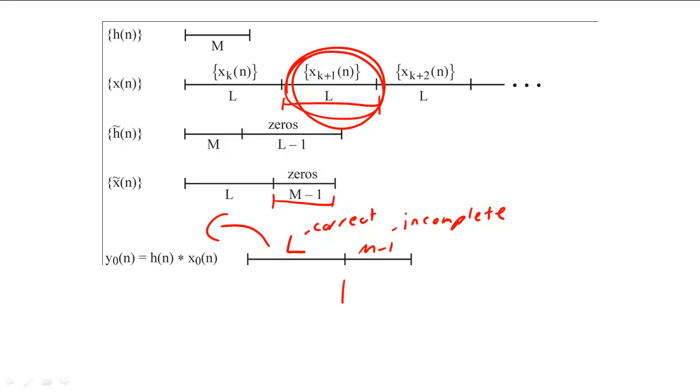We can complete the first convolution by calculating the second convolution. By overlapping and adding the second convolution with the first, we can complete the convolution for the first input sequence and begin the convolution for the second input sequence.